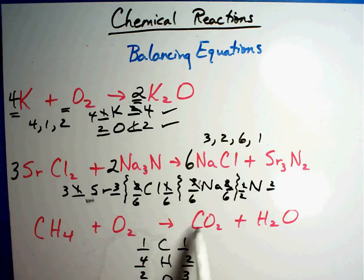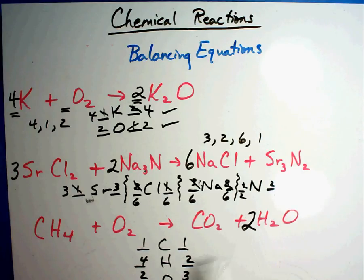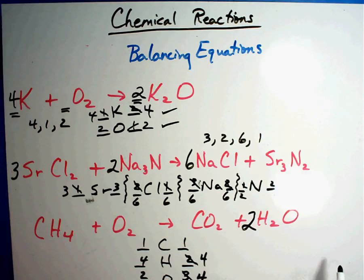One carbon, one carbon, that's fixed. So let's fix the H's. Four H's and two H's, that means I need a two there. That gives me two times two is four H's. But that also messes up my O's. Two O's and then that two, four O's. So that means that I'm going to have to have a two here. Give me four. Oh, looks like I got it.